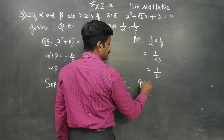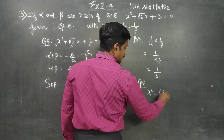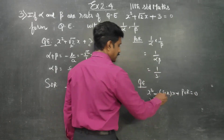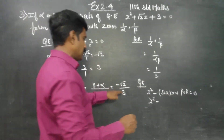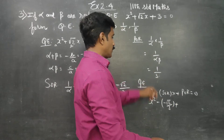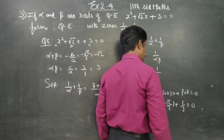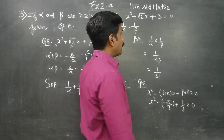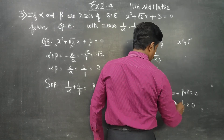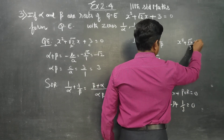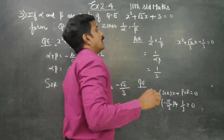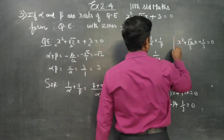I want a quadratic equation. The formula is x squared minus (sum of the roots) times x plus (product of the roots) equals 0. Substituting: x squared minus (minus root 2 by 3) times x plus 1 by 3 equals 0. This simplifies to x squared plus root 2 x by 3 plus 1 by 3 equals 0. This is my quadratic equation.